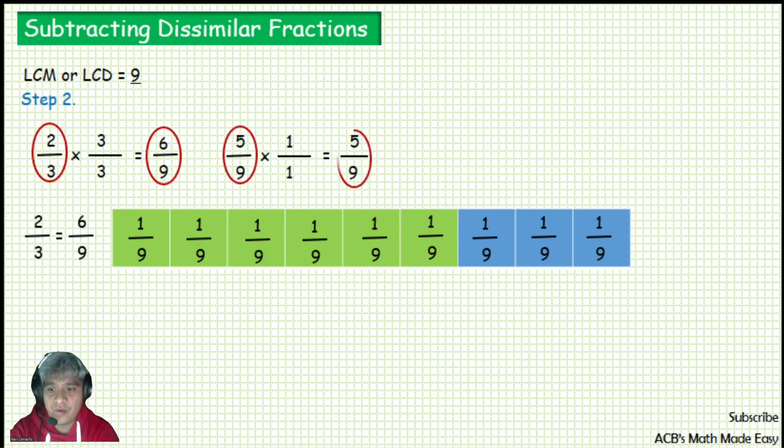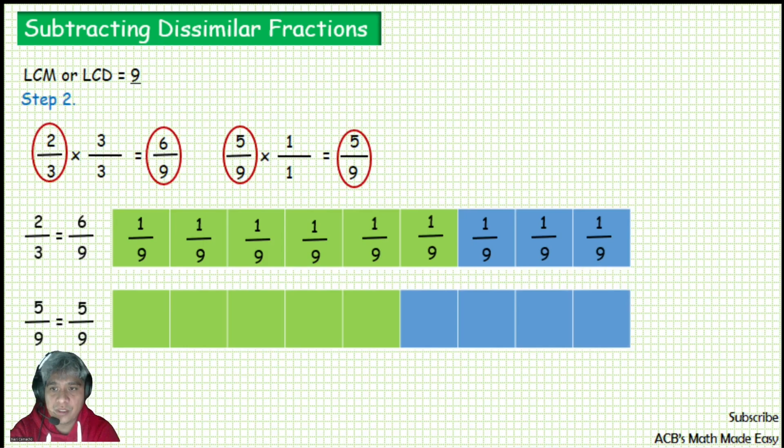And our 5 over 9 in step number 2 is 5 over 9 also. These blocks represent 5 over 9. Each block represents 1 over 9, and there are 5 green blocks because the numerator is 5.